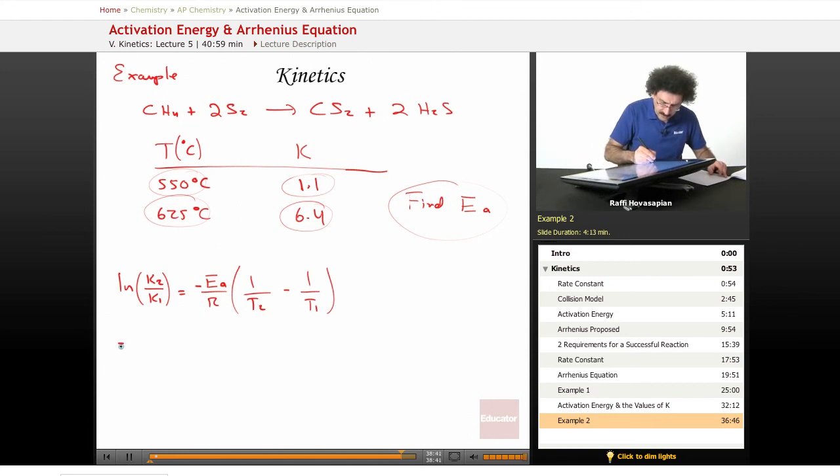So this is equal to 6.4, that's this number, over 1.1 is equal to minus EA over 8.31 times, now...